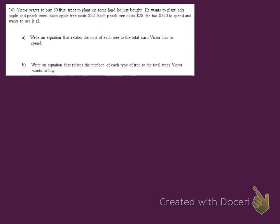Problem 16. Victor wants to buy 30 fruit trees to plant on some land he just bought. He wants to plant only apple and peach trees. Each apple tree costs $22, each peach tree costs $28. He has $720 to spend and wants to use it all. Letter A says we need to write an equation that relates the cost of each tree to the total cash Victor has to spend.